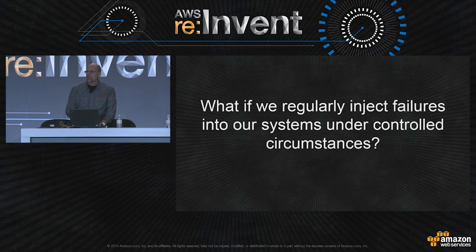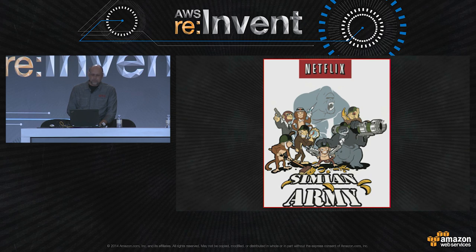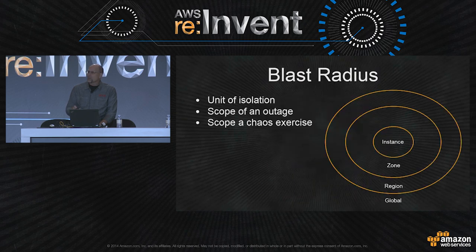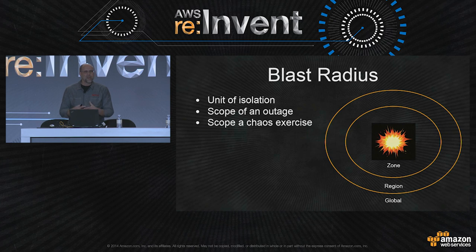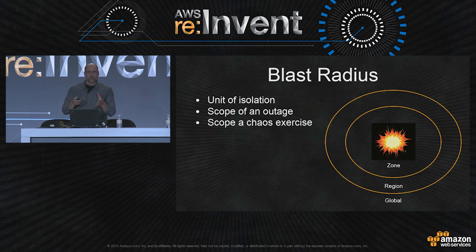So we asked ourselves several years ago: what if we regularly inject failures into our systems? What if we break it on purpose and do this in production, which is where we get all of that scale? That was the impetus behind the Simian Army. When we talk about the Simian Army, we're going to talk about a few select ones that affect the scope of an outage. We talk a lot internally about blast radius — the impact of an effect. This could be a unit of isolation, an instance, a region, or a zone. It's also the potential scope of an actual outage and the scope of a chaos exercise when we're intentionally trying to break things.